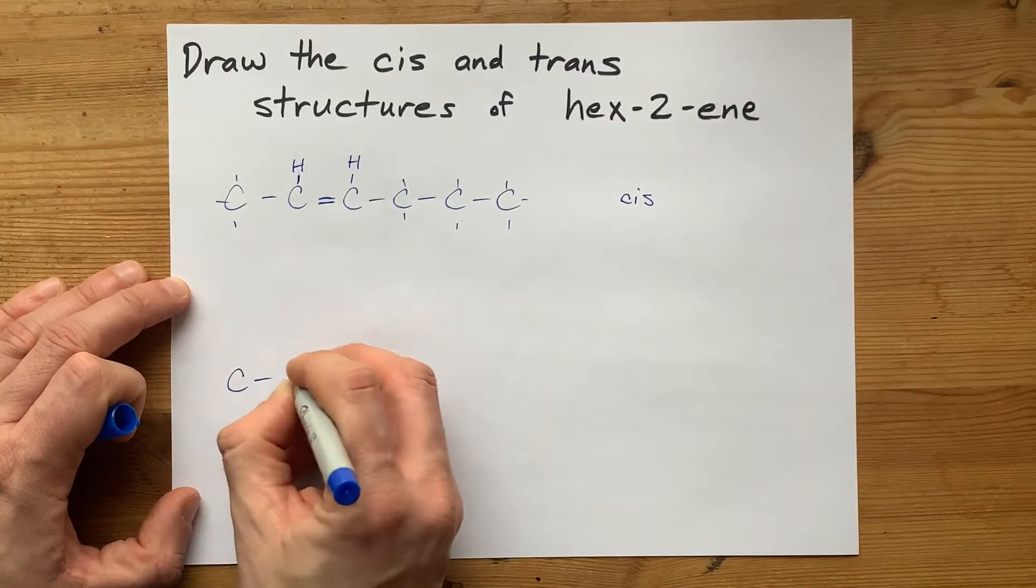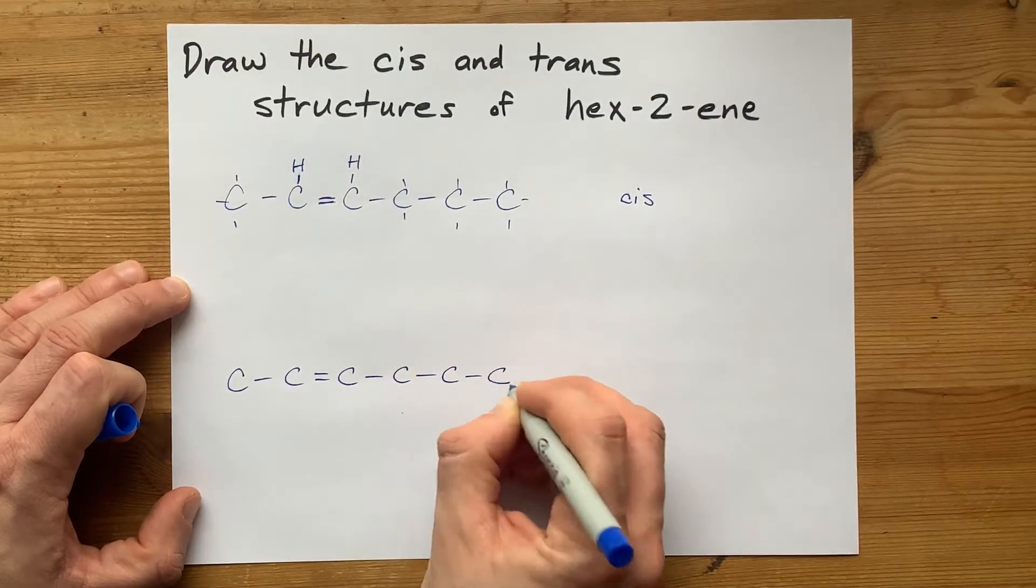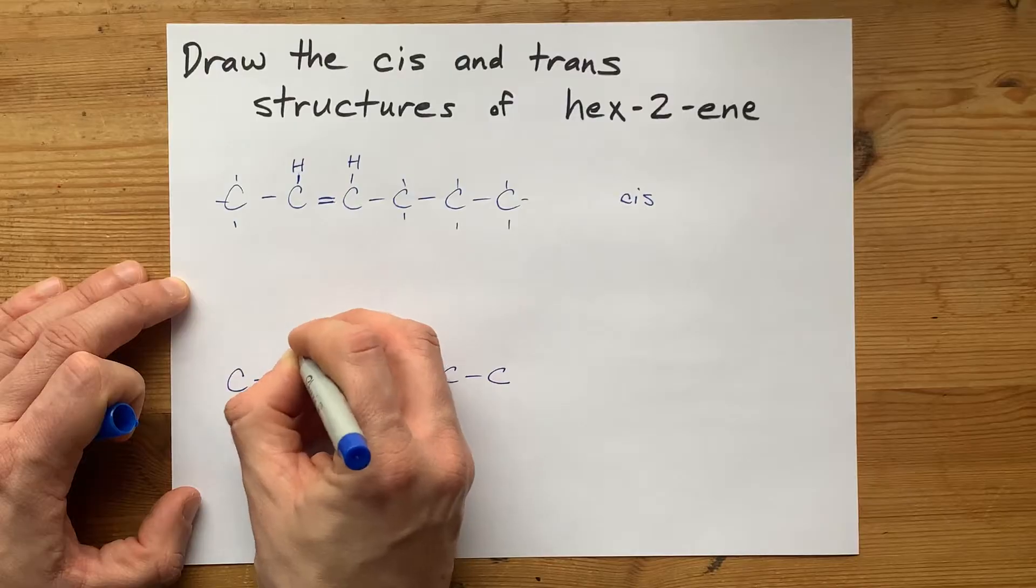And the exact same molecule, but with the hydrogens drawn on opposite sides of the double bond, is the trans isomer.